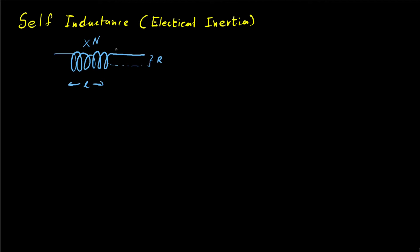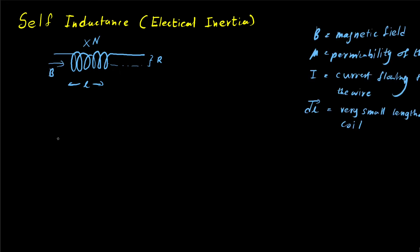This property that the coil or solenoid exhibits is what we call electrical inertia, or self-inductance. Now we can find the self-inductance generated inside the coil. To find that, first we have to find the magnetic field inside the coil.